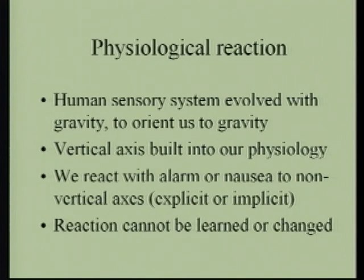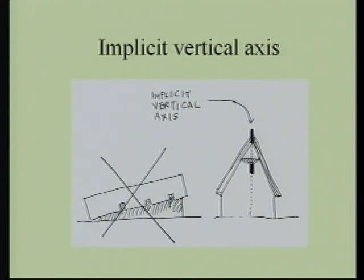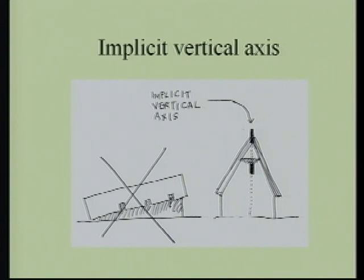This reaction cannot be learned or changed. You can go to an architecture class and learn to say a diagonal building is very beautiful, but you go in it and you'll feel nausea. A building with an implicit vertical axis defined by its reflectional symmetry — like an old traditional farmhouse or church — makes us feel comfortable, a positive sense of well-being. We tend to prefer such buildings because they add positively to our physiological state, whereas buildings with diagonal axes give us a thrill because they make us feel anxious.